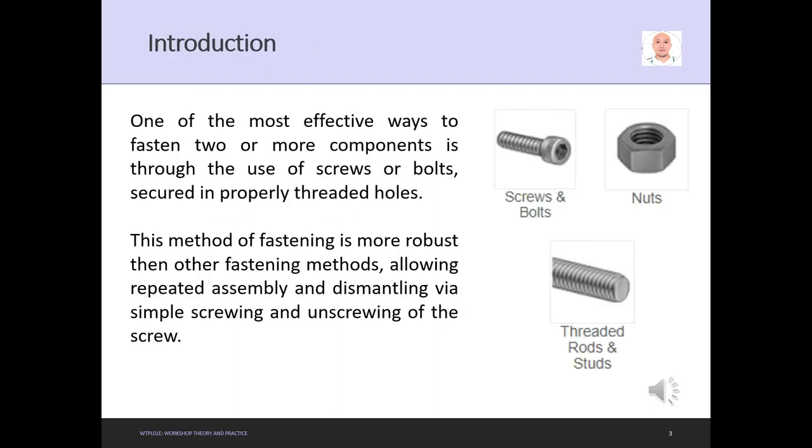Introduction: One of the most effective ways to fasten two or more components is through the use of screws or bolts secured in properly threaded holes. This method of fastening is more robust than other fastening methods, allowing repeated assembly and dismantling via simple screwing and unscrewing of the screw.